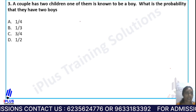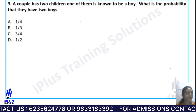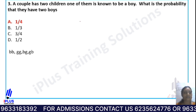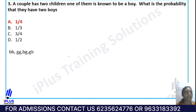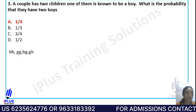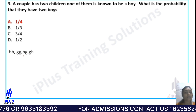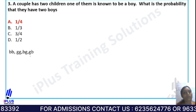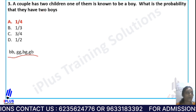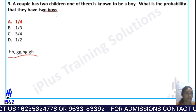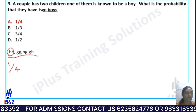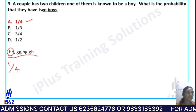For this probability question, with two children where one is known to be a boy, we consider the possible combinations. One case is both boys, another is one boy and one girl. The answer given is Option A, one by four.